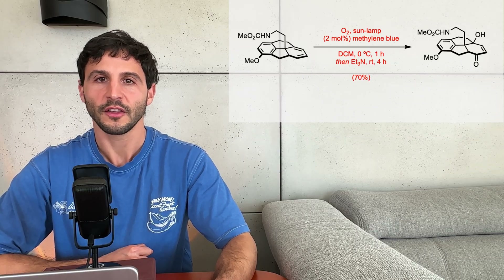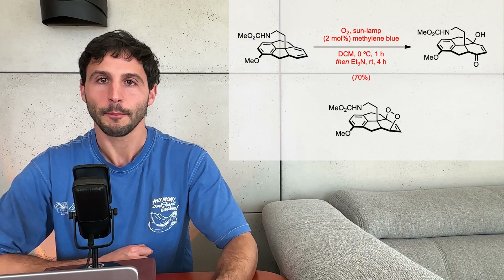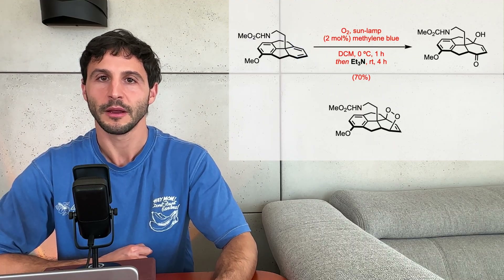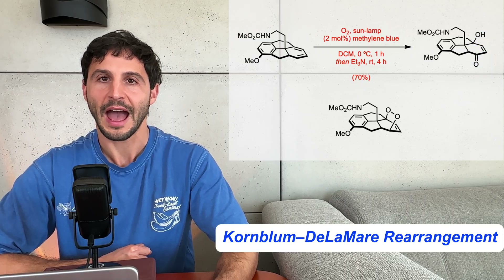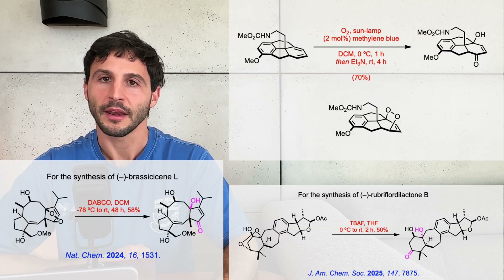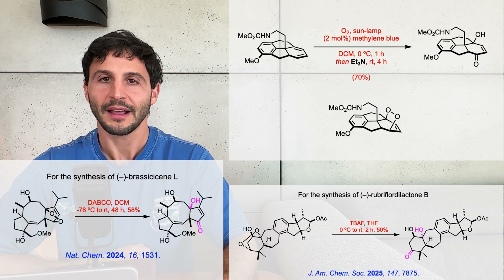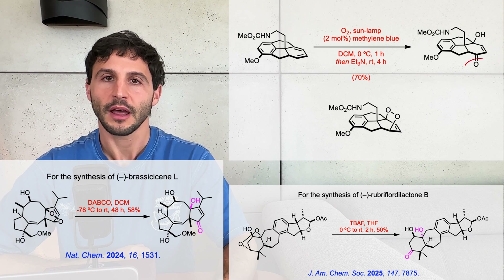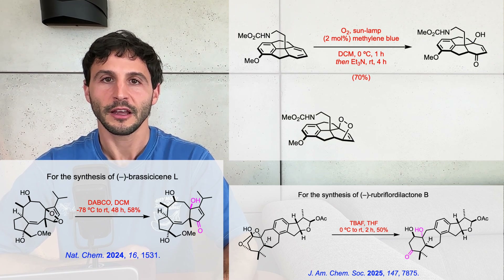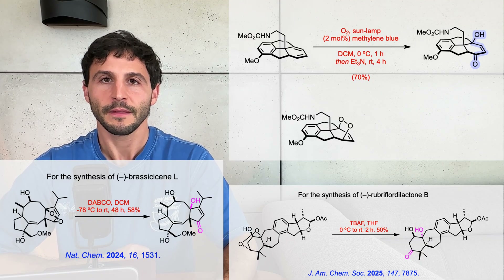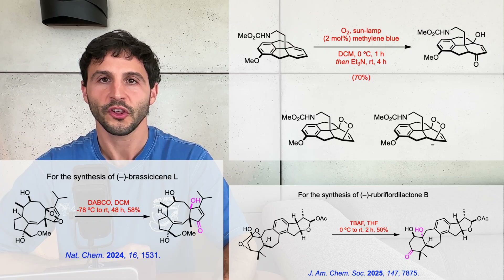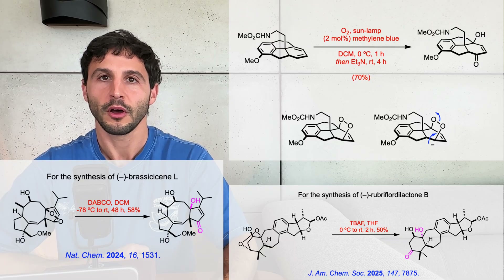Addition of singlet oxygen across the diene gives an endoperoxide which, upon treatment with triethylamine, is converted into a gamma-hydroxyenone through a Kornblum-DeLaMare reaction. In the Kornblum-DeLaMare rearrangement, an alkyl peroxide undergoes base-catalyzed rearrangement to yield a ketone and an alcohol. In this case, the bicyclic peroxide gives rise to the corresponding gamma-hydroxyenone. Typically, the process involves deprotonation of the peroxide to generate a peroxyanion, which then undergoes heterolytic oxygen-oxygen bond cleavage and subsequent rearrangement to form the carbonyl compound.